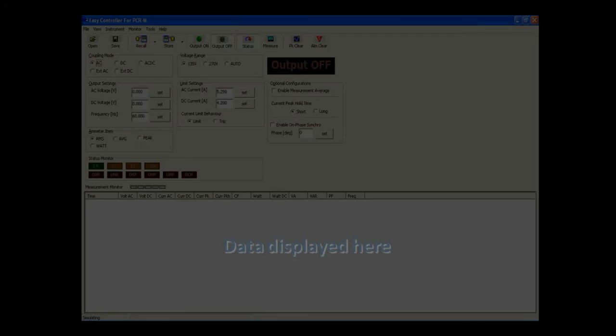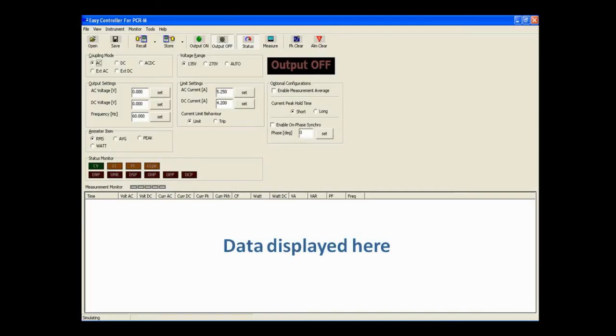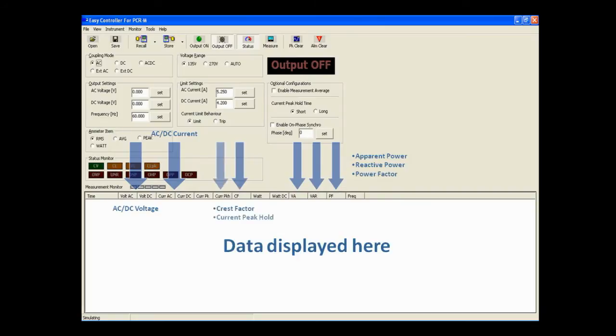The PCR-M also comes with standard control software. With this software, you can measure the voltage, current, and power of the AC and DC output, as well as the apparent power, reactive power, power factor, crest factor, and current peak hold.